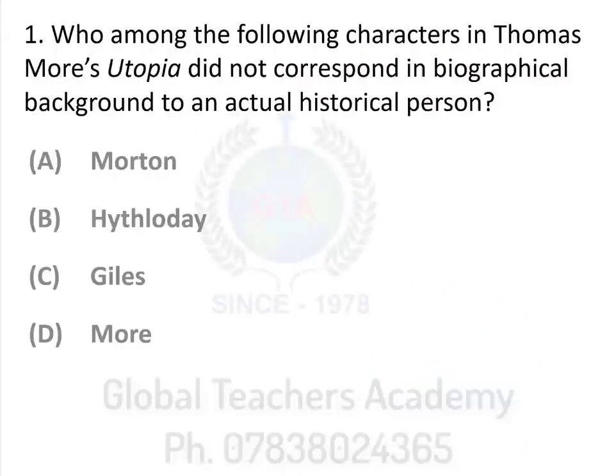The first question asks: who among the following characters in Thomas More's Utopia did not correspond in biographical account to an actual historic person? Your options are: A. Morton, B. Hythloday, C. Giles, D. More.